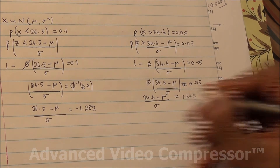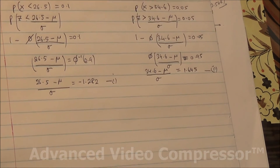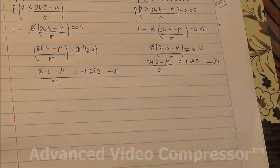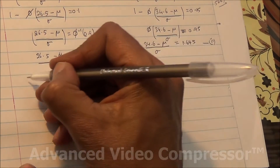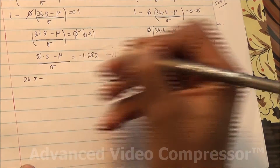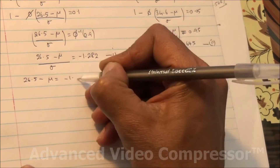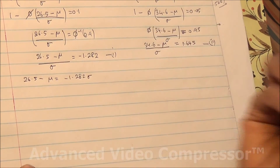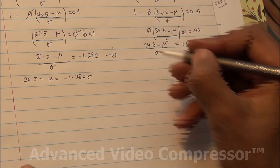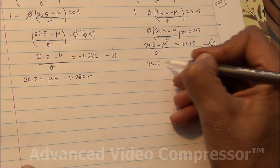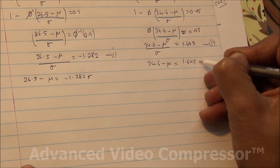We now have two simultaneous equations: (26.5 - mu)/sigma = -1.282, and (34.6 - mu)/sigma = 1.645. Rearranging: 26.5 - mu = -1.282*sigma, and 34.6 - mu = 1.645*sigma.